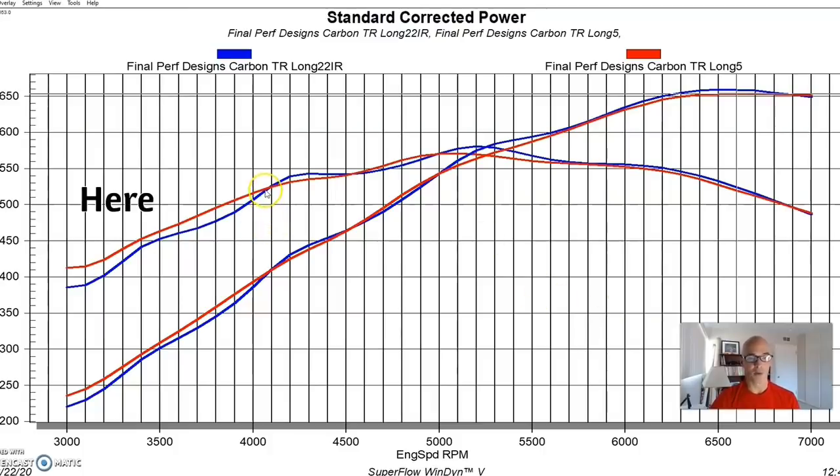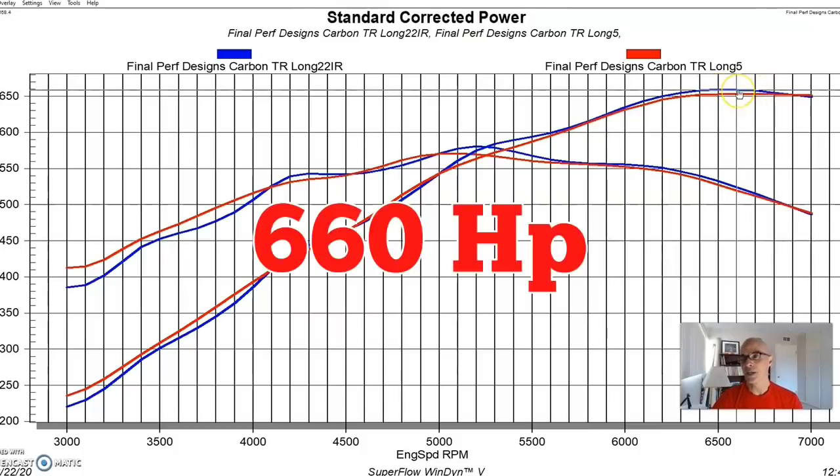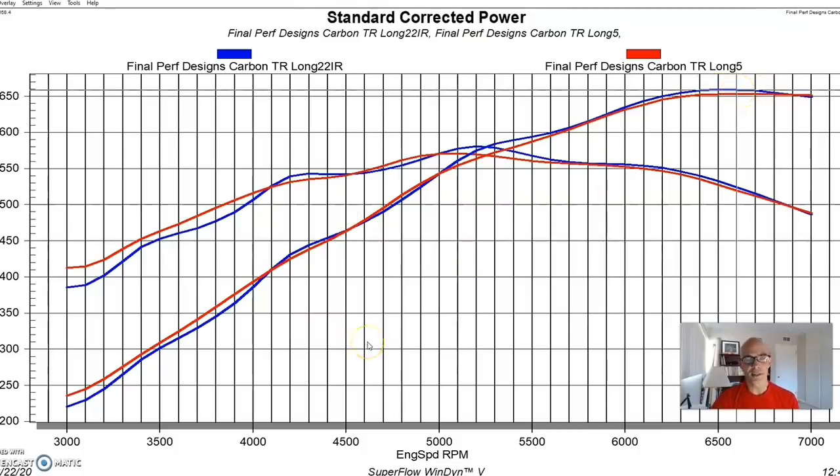The blue is the individual runner. As you can see, if you take a look down here, we lost power compared to having the common plenum with the IR deal. We picked up a little bit of power here between 4000 and 4500, started losing a little bit, then started gaining a little bit between 5 and 5000, then picked up a little bit of peak power out at the very top. The peak power checked in at 660 horsepower. It's not a huge change given the fact that the runner length is basically the same. All we've done is get rid of the common plenum. It was an interesting test on the Carbon TR intake.